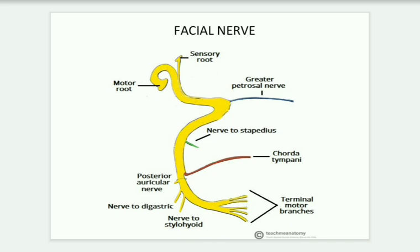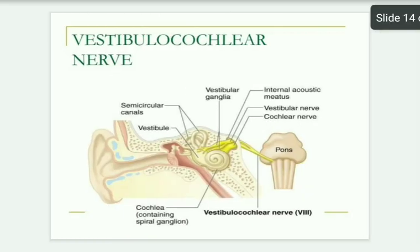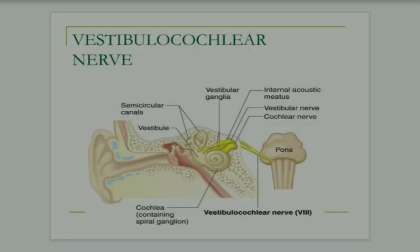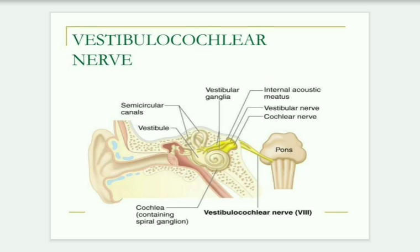Next, entering into the vestibulocochlear nerve — the 8th cranial nerve. It has two components: the vestibular component for balance, and the cochlear component for hearing. The vestibulocochlear nerve attaches to the lateral surface of the brain stem, between the pons and medulla, after emerging from the internal acoustic meatus and crossing the posterior cranial fossa as a single nerve within the substance of the petrous part of the temporal bone.